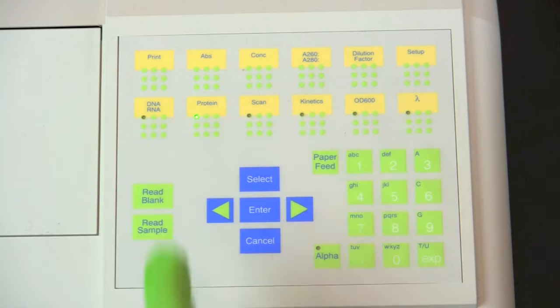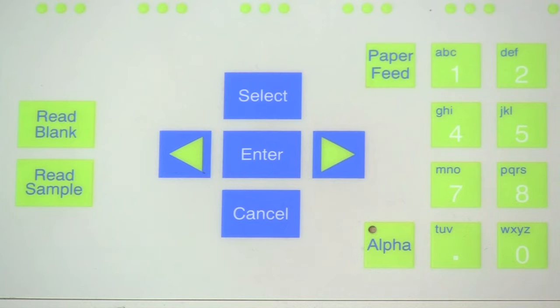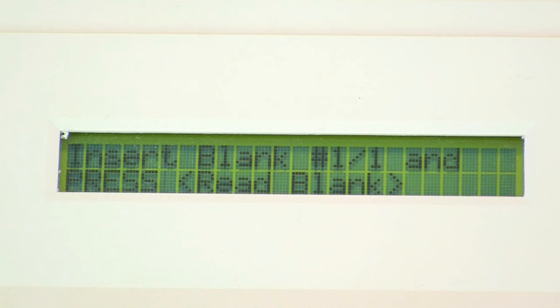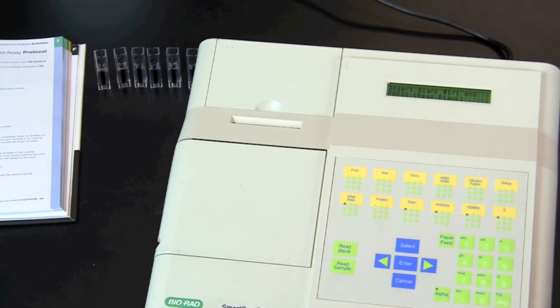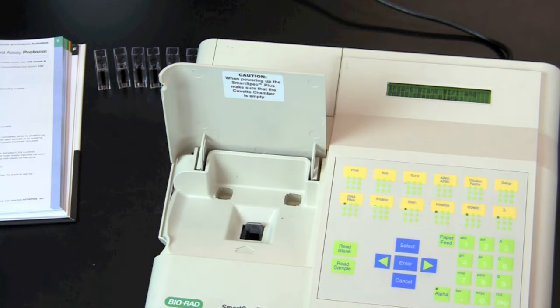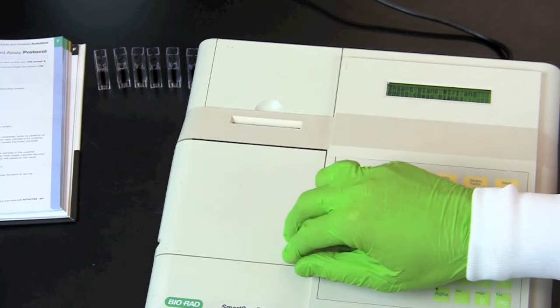To determine the protein concentration using a spectrophotometer, select for the Bradford assay. When asked to insert blank into the spectrophotometer, insert the cuvette labeled control. Use the blank to set the spectrophotometer to zero absorbance, or 100% transmittance.